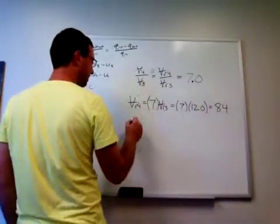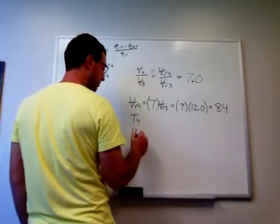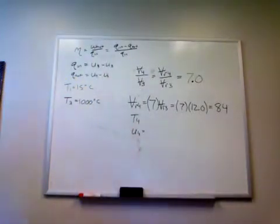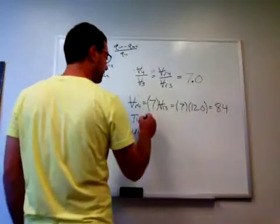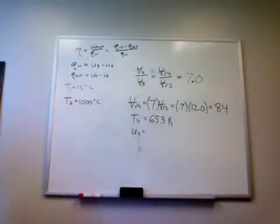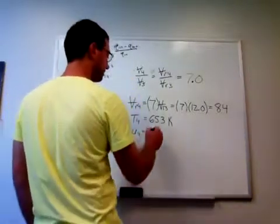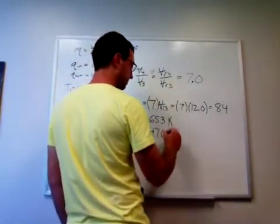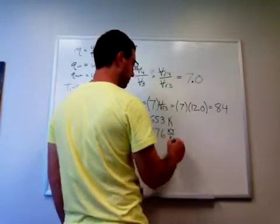And so the value of Vr is 84. And so that means T4 and U4. It's going to be maybe 652, 653. And U4 is 476.